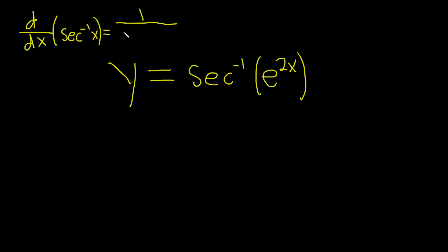divided by the absolute value of x, times the square root of x squared minus 1. This is the formula we're going to use in this problem.